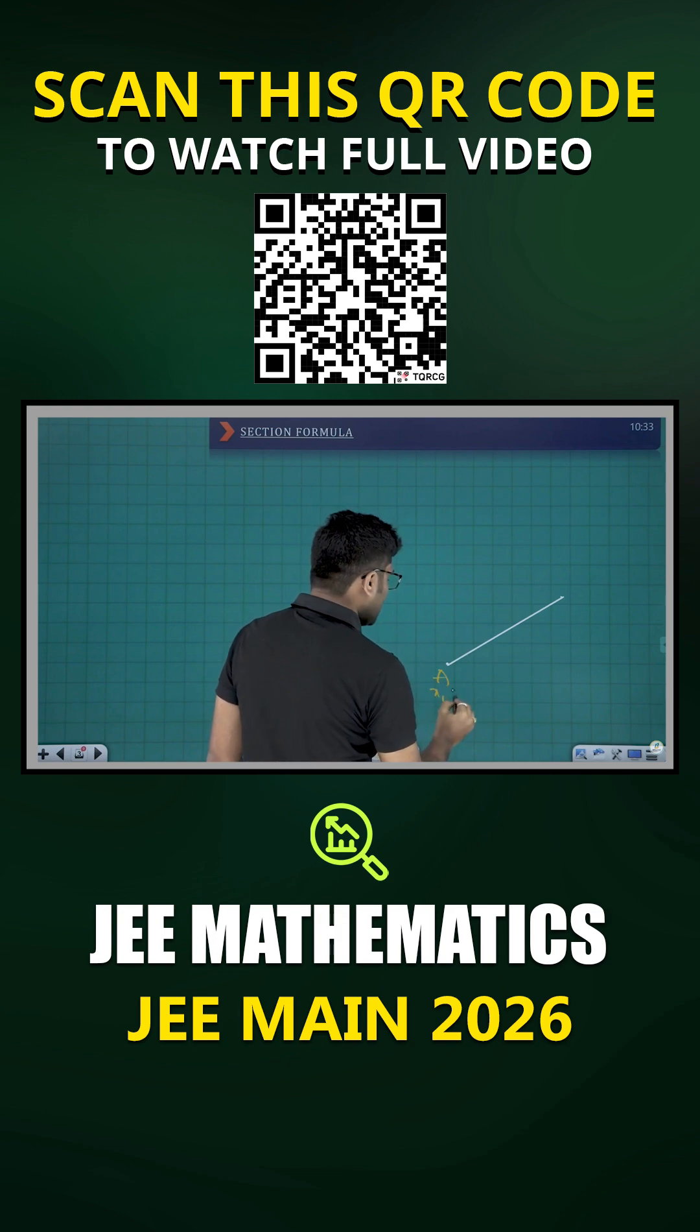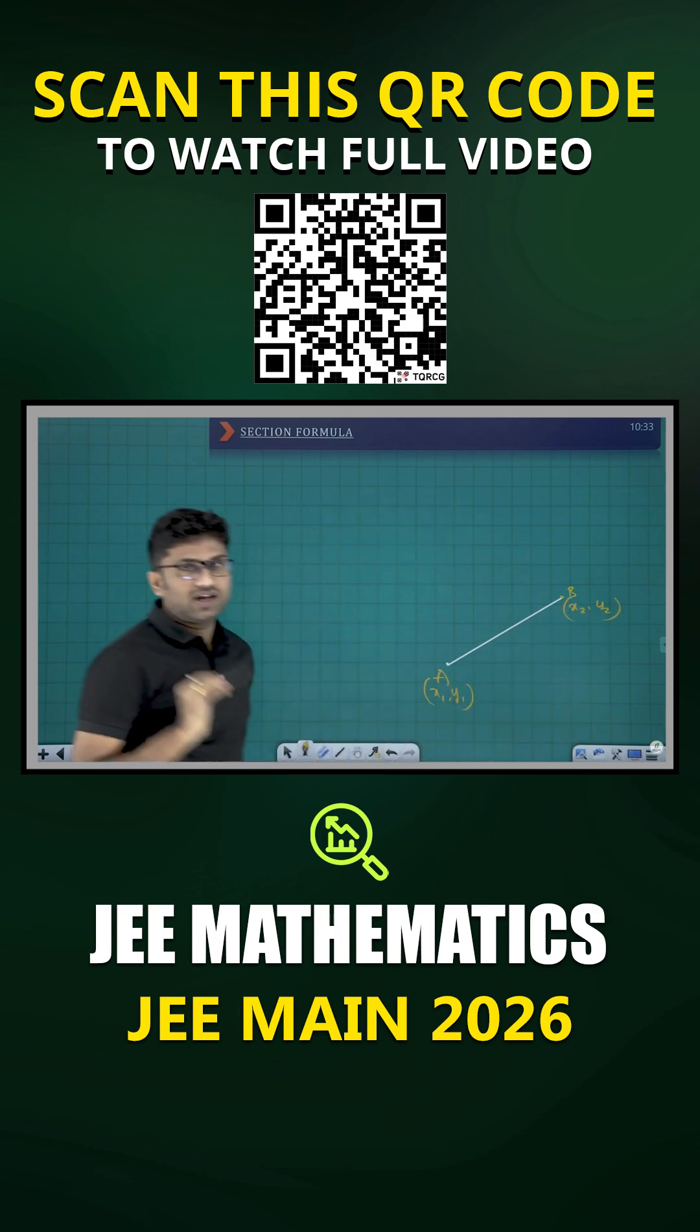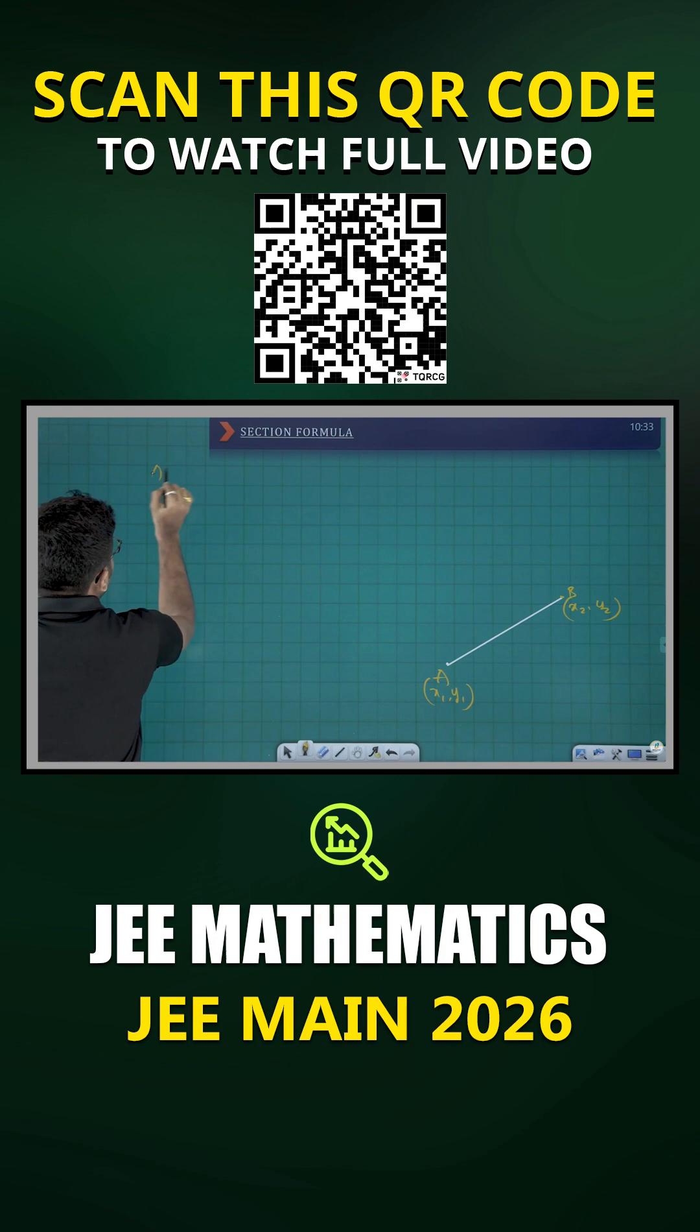If A of (x1, y1) and B of (x2, y2) are any two points in the Cartesian plane, then the distance between A and B is given as square root of (x2 - x1)² plus (y2 - y1)². This is the distance formula.